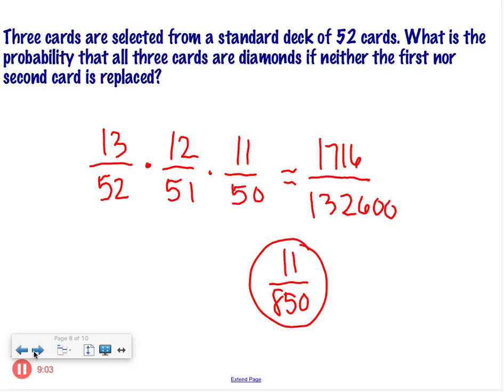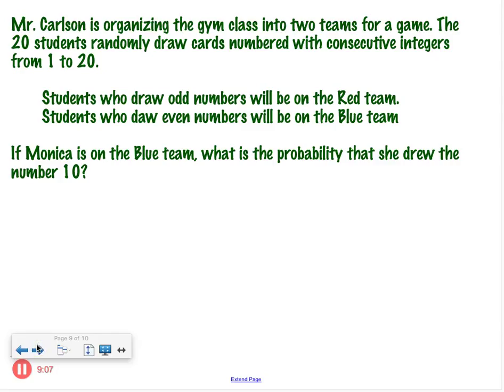Okay, then this last one, folks, it's something we call conditional probability. So we're going to give it a situation, and we're going to know something is true, and then we're going to find the probability. Okay? So let's read here. Mr. Carlson is organizing the gym class into two teams for a game. The 20 students randomly draw cards numbered with consecutive integers from one to twenty. Students who draw an odd number will be the red team. Students who draw even numbers will be on the blue team. If Monica is on the blue team, what is the probability that she drew the number ten? So we already know that Monica falls in this category here, right? But it's conditional probability since we know she's on the blue team.